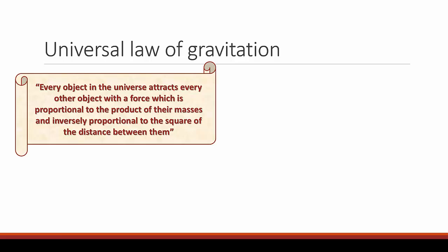There are two components in this law. The first states that the gravitational force is proportional to the product of their masses, and the second part says that it is inversely proportional to the square of the distance between them.